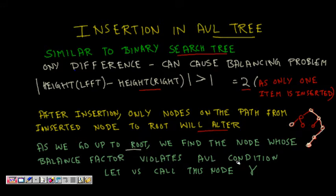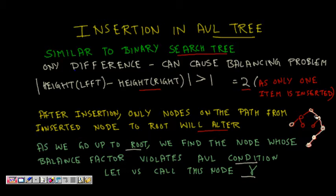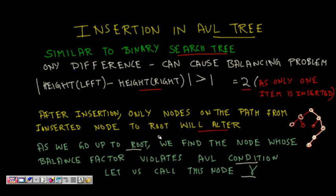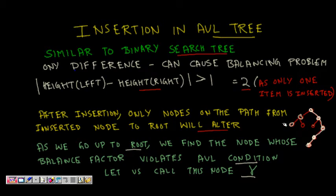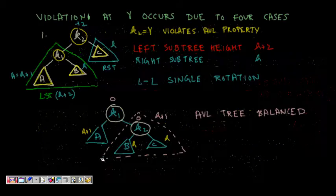As we go up towards the root, the deepest node whose balance factor has violated the AVL condition — we note that node and name it gamma. When we add a node, the height of subtrees changes going up the path, but nodes not on that path are unaffected. That is why we go from the inserted node towards the root, and only nodes that fall in that path will have their balance factor affected.